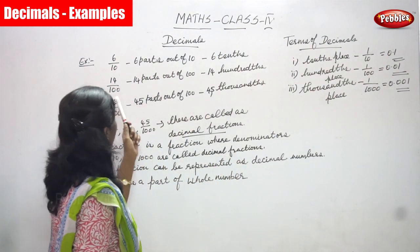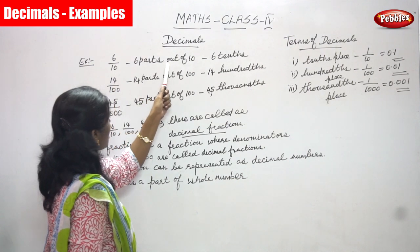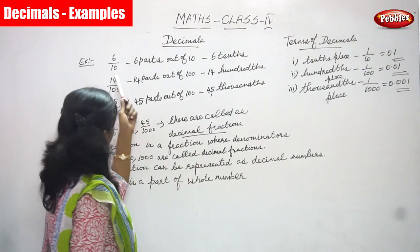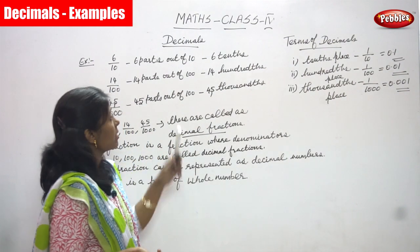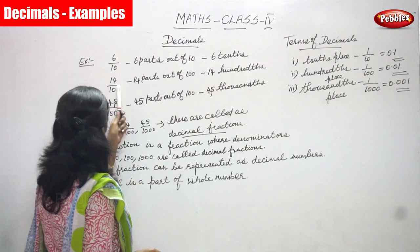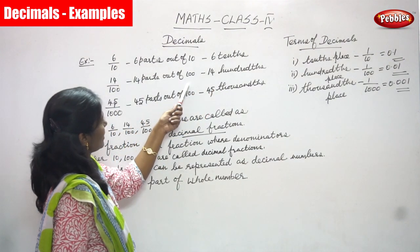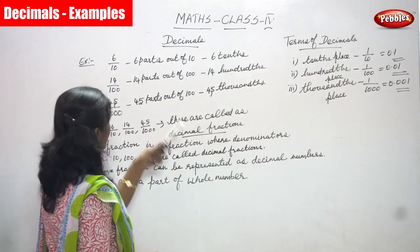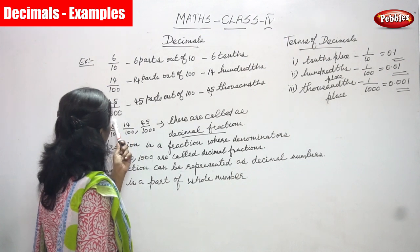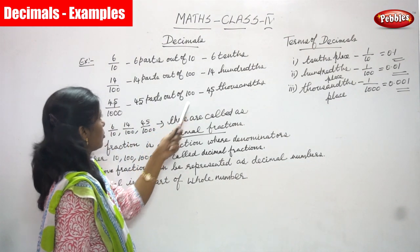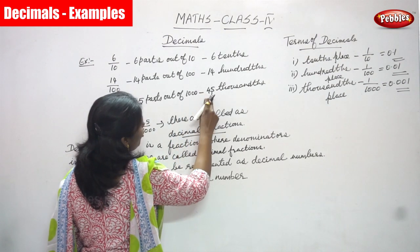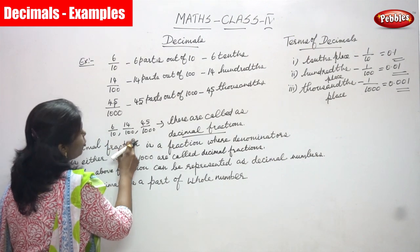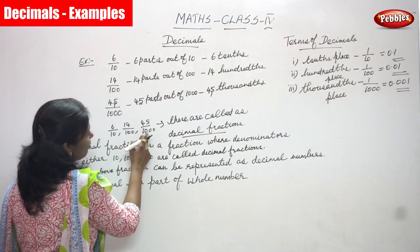Look at what I've written: 6 by 10 — 6 parts out of 10, it is 6 tens. After that, 14 by 100 — 14 parts out of 100, that is 14 hundreds. And 45 by 1000 — 45 parts out of 1000, so we can say 45 thousands. These are the examples: 6 by 10, 14 by 100, and 45 by 1000.